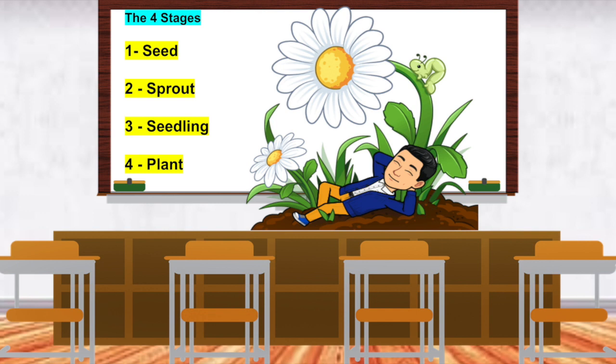Stage two is sprout. What word? Get ready. Yes, sprout. During the sprout stage, after you've added water, the seed starts to sprout. That means the roots start coming out very little, and at the top you'll start seeing a little bit of green from the leaf coming out of the ground.